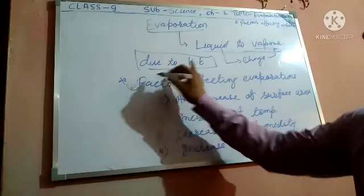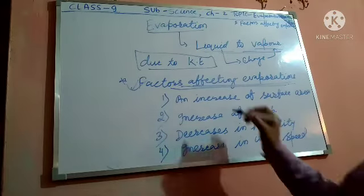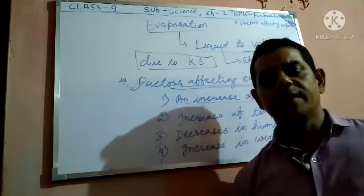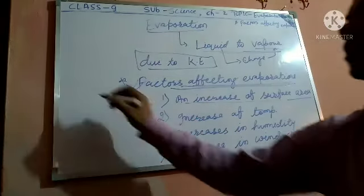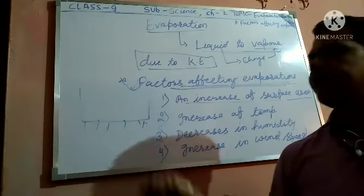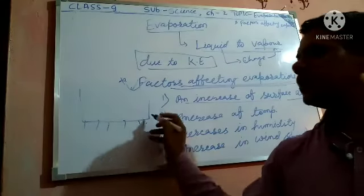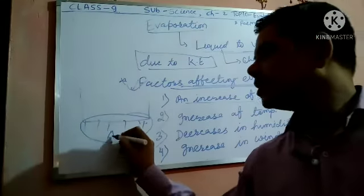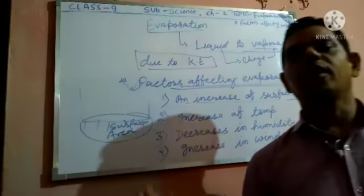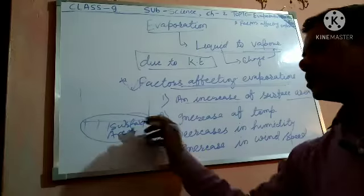Now the next topic is factors affecting evaporation. The first factor is increase of surface area. When the surface area increases, that area in contact with heating of that particle increases, so more evaporation occurs. More area means more evaporation and more heat is generated. So evaporation depends on surface area.